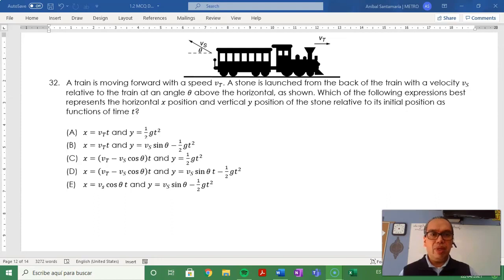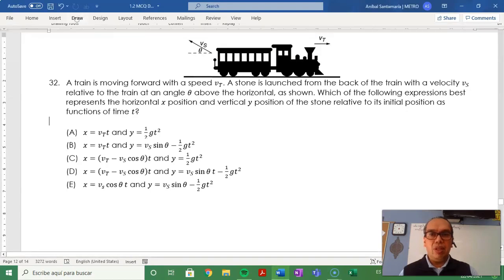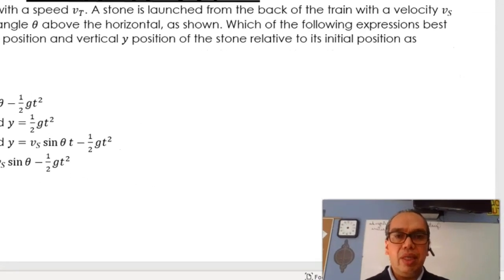Which of the following expressions best represents the horizontal x position and vertical y position of the stone relative to its initial position as functions of time t? Now we need to discuss the relative velocity because they give you here